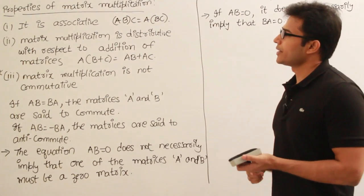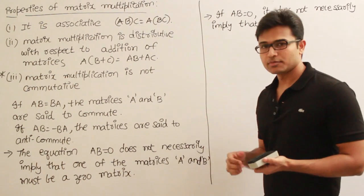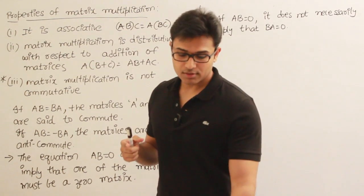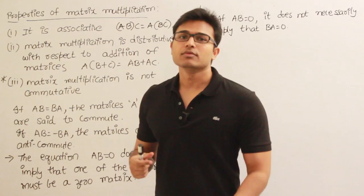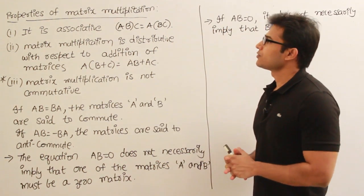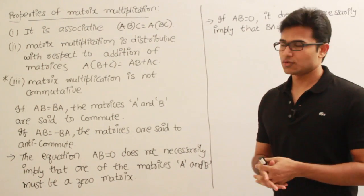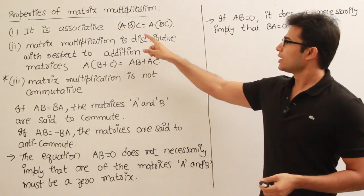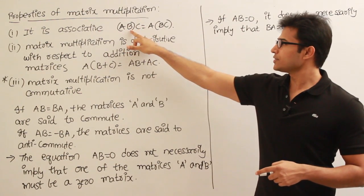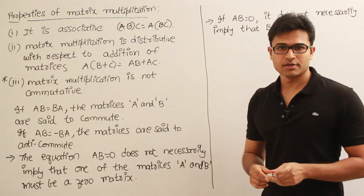Now watch the properties of matrix multiplication. It is important to know the properties because later in set theory we use them to find out whether something is a group or abelian group. First of all, matrix multiplication is associative. Associative means if you have A, B, C you can either multiply AB first or BC first and then multiply the result later.